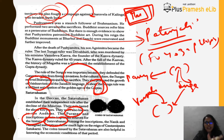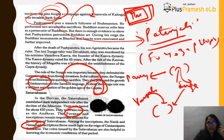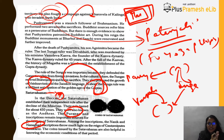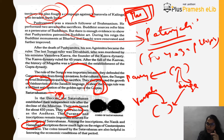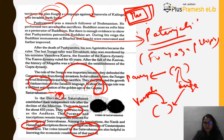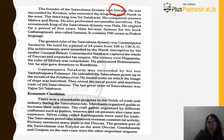Among Satvahana inscriptions, the most important are the Nashik inscription and the Nanaghat inscription, which shed light on the ruler Gautamiputra Satakarni. Although Satvahana society was patriarchal, kings were known by their mother's name — so Gautamiputra Satakarni means 'son of Gautami.' The dynasty was not matriarchal, despite this naming convention. Coins issued by the Satvahanas also provide evidence about their society and economy.